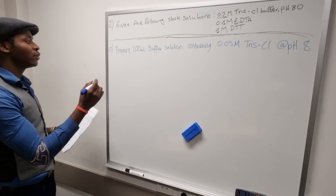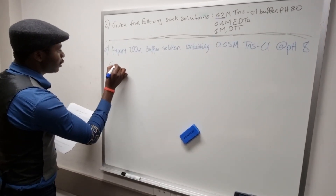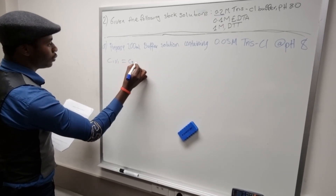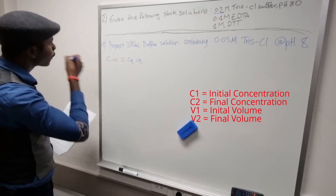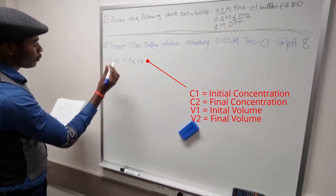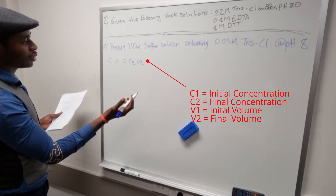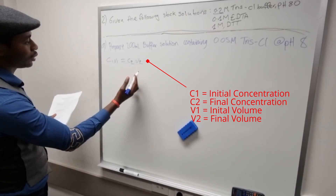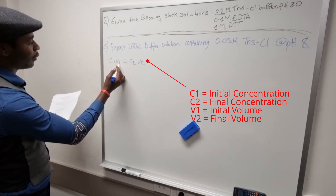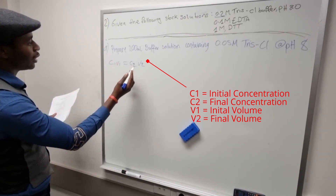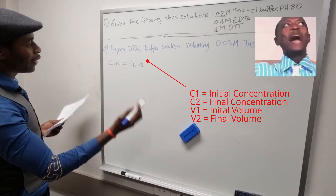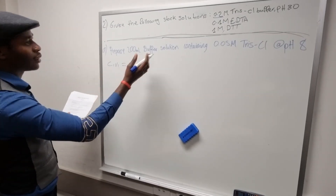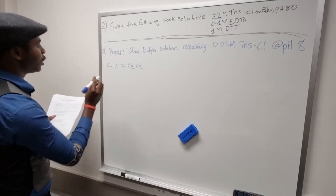To do these questions we start with the equation C1V1 = C2V2, where C1 is the initial concentration, C2 is the final concentration, V1 is the initial volume, and V2 is the final volume. We'll list everything we know.